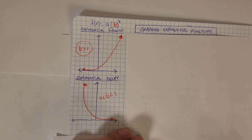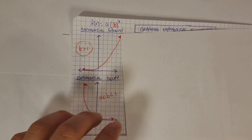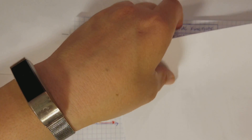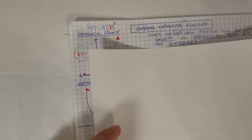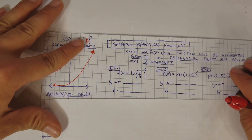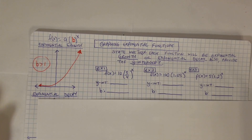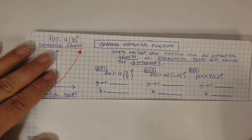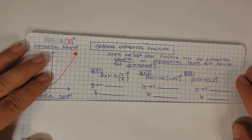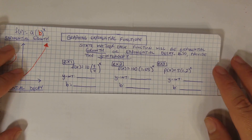With decay, it's going to be dividing every single time by a number. Let's practice some quick examples. The instructions say: state whether each function will be exponential growth or exponential decay, and also provide the y-intercept for these three examples — example 1, 2, and 3.